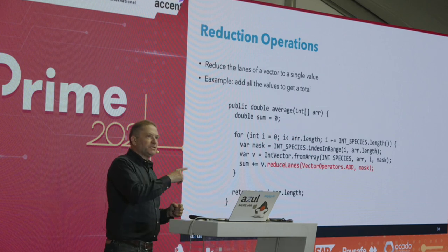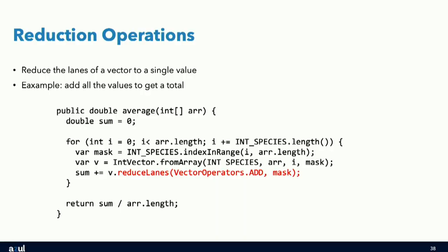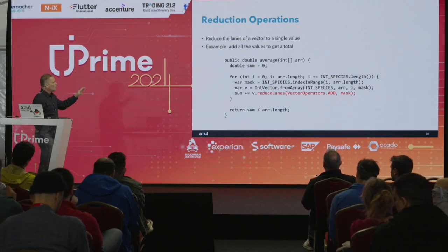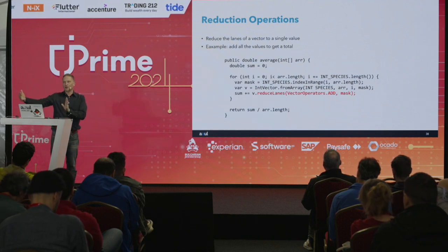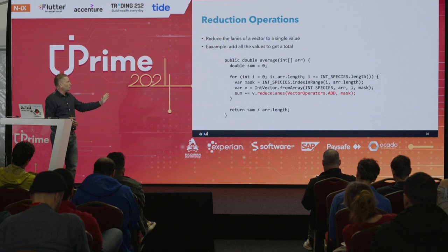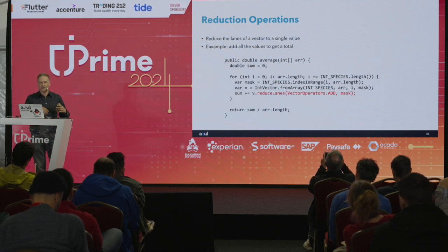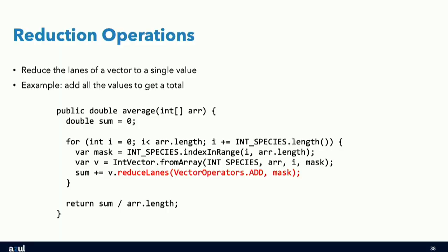Reduction operations let you take all values in your lanes and combine them into one result. For example, to compute a total sum, rather than applying the same operation to each lane separately, you sum all lane values together into a single value. This allows you to compute an average across an entire array efficiently using vectors.